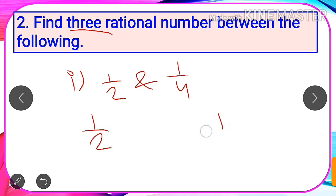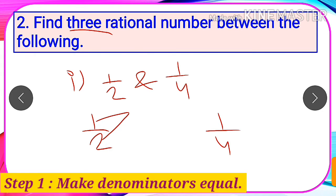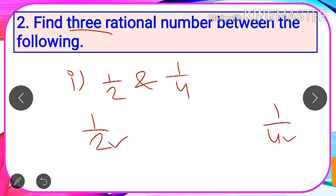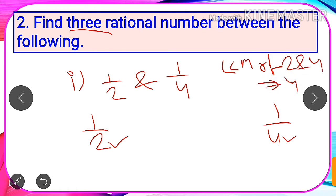As you can see, we have 1 by 2 and 1 by 4. These are both rational numbers because in 1 by 2, both 1 and 2 are integers and 2 is not equal to zero. In 1 by 4, both 1 and 4 are integers and 4 is not equal to zero. Our first task is to make the denominators the same. Here the denominators are 2 and 4, so we take the LCM of 2 and 4, which equals 4.